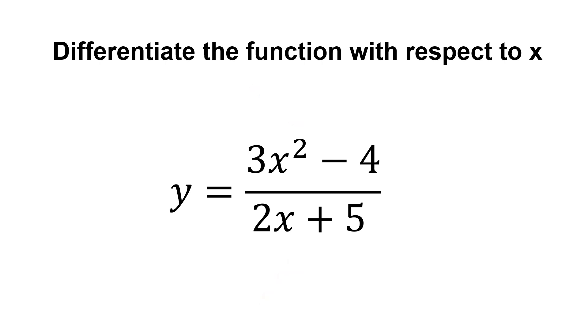Just like in this example, we have 3x squared minus 4, divided by 2x plus 5.